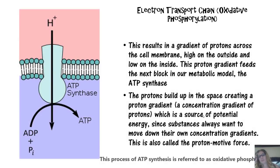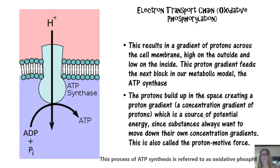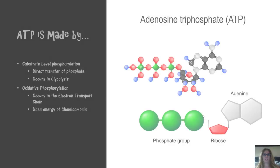Oxygen is our final or terminal electron acceptor, which is why this is considered aerobic cellular respiration — meaning with oxygen. The energy from the electron transport chain is used by complex four to pump even more protons into the periplasmic space (prokaryotes) or peripheral space (eukaryotes). This results in a gradient of protons across the cell membrane — high on the outside, low on the inside. This proton gradient feeds the ATP synthase, which harnesses the potential energy of the proton motive force to make ATP.